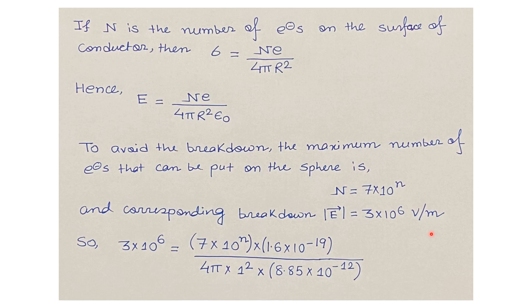Substituting all values into the equation: 3 × 10⁶ = (7 × 10ⁿ) × (1.6 × 10⁻¹⁹) divided by (4π × 1² × 8.85 × 10⁻¹²), since R = 1 meter.